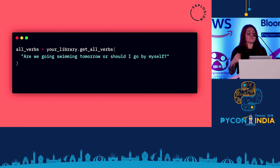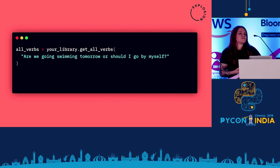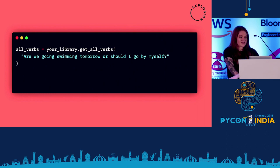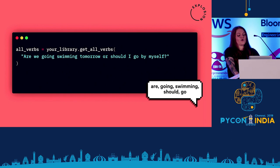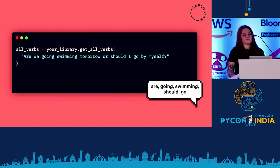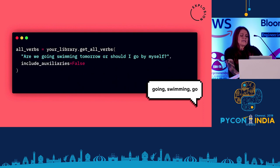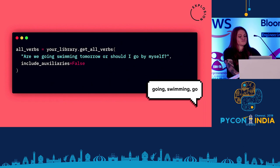Imagine you've written a library that takes a piece of text and predicts the part-of-speech tags — what's a verb, what's a noun — and gives that back to you. You pass it a text and get back the verbs: are, going, swimming, should, and go. But you're getting auxiliary verbs like 'are' and 'should' that don't really express any action, so you might want a setting to exclude those. So now you only have the action verbs. You have: going, swimming, and go. But going and go have the same base form 'go,' so you might add a flag to resolve words back to their base form. Now you have: go, swim, go — but the same word twice. So you might as well add a flag to exclude duplicates.